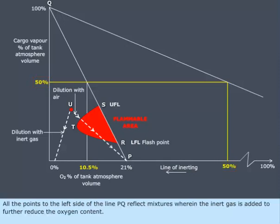All the points to the left side of the line PQ reflect mixtures wherein the inert gas is added to further reduce the oxygen content.